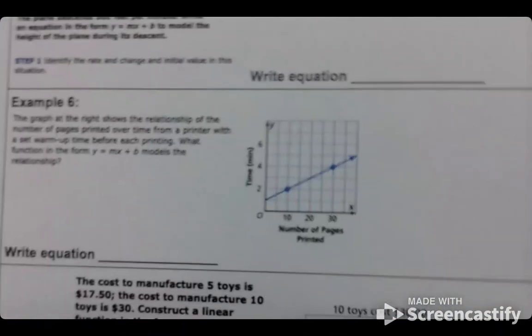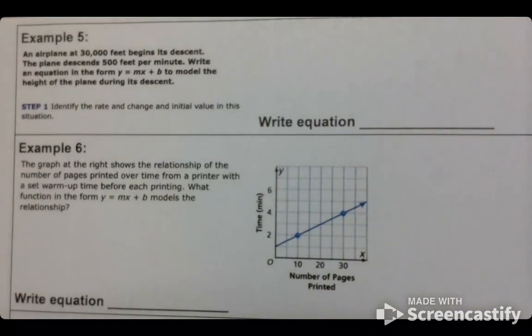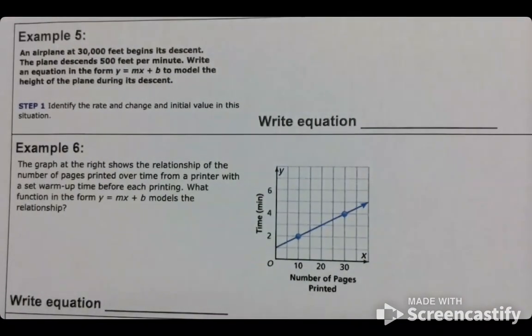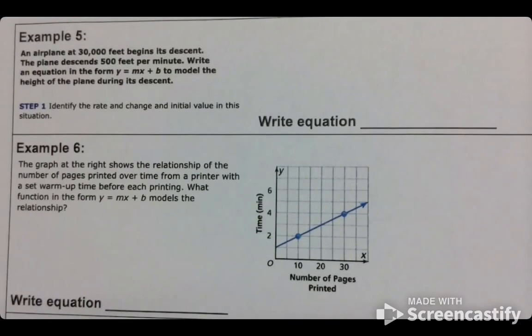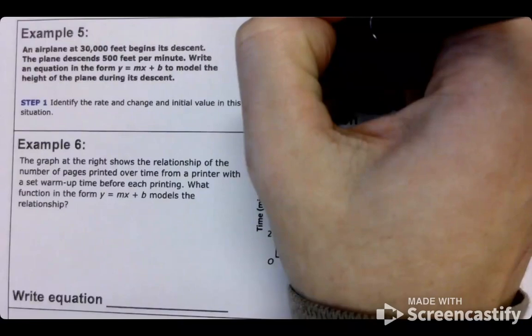All right. For number 5, an airplane at 3,000 feet begins its descent. The plane descends 500 feet per minute. So what's our equation going to look like?